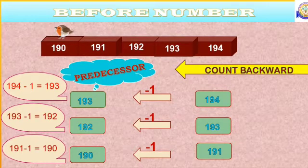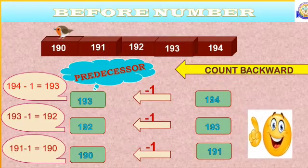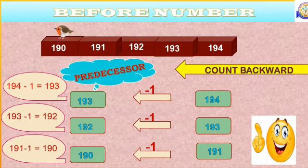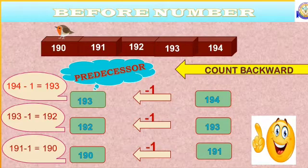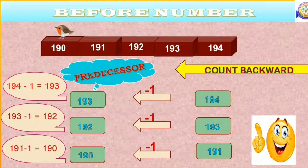So, please remember, if we subtract one from a number, we will get before number. Or, we can say, we get predecessor. Don't forget.